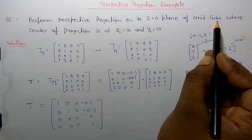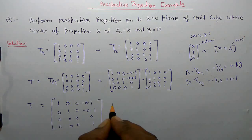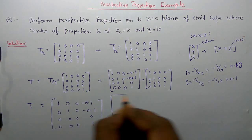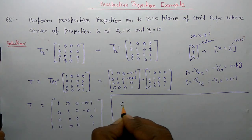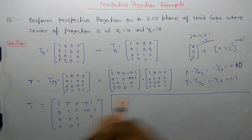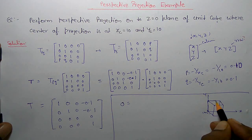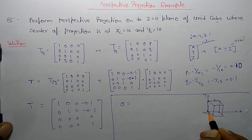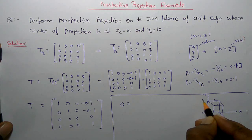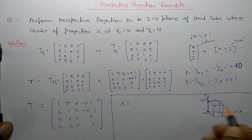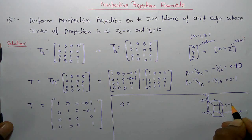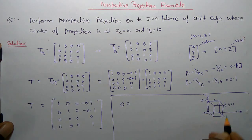Now the object is a unit cube. So the unit cube object matrix — if it is a unit cube and each side is 1, for example this corner is (0, 0, 0), this would be (0, 1, 0), and this would be (1, 1, 1). Similarly you can represent all vertices of the unit cube.